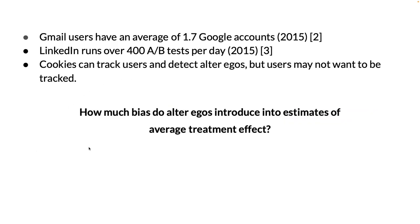A-B tests are ubiquitous. As of 2015, LinkedIn ran over 400 tests per day. And depending on the platform, alter egos can be very common. As of 2015, Gmail users had an average of 1.7 Google accounts. Further, you can't always use cookies to link accounts together since users want to maintain privacy.